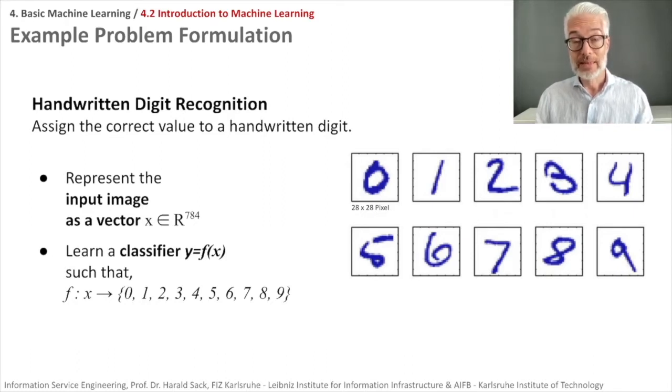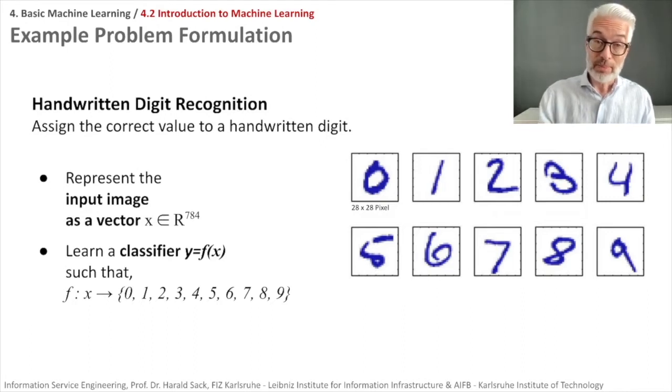We have to represent this digit as an input vector. We simply take the pixels—we have 28 by 28 pixels—so this gives a vector of size 28 times 28, a vector x from a space with 784 dimensions. Now we learn a classifier, a function y = f(x), such that x maps to exactly one of the digits from zero to nine. So far we don't know how to come up with that function f, but there must be some function f that maps this vector x to a specific class.